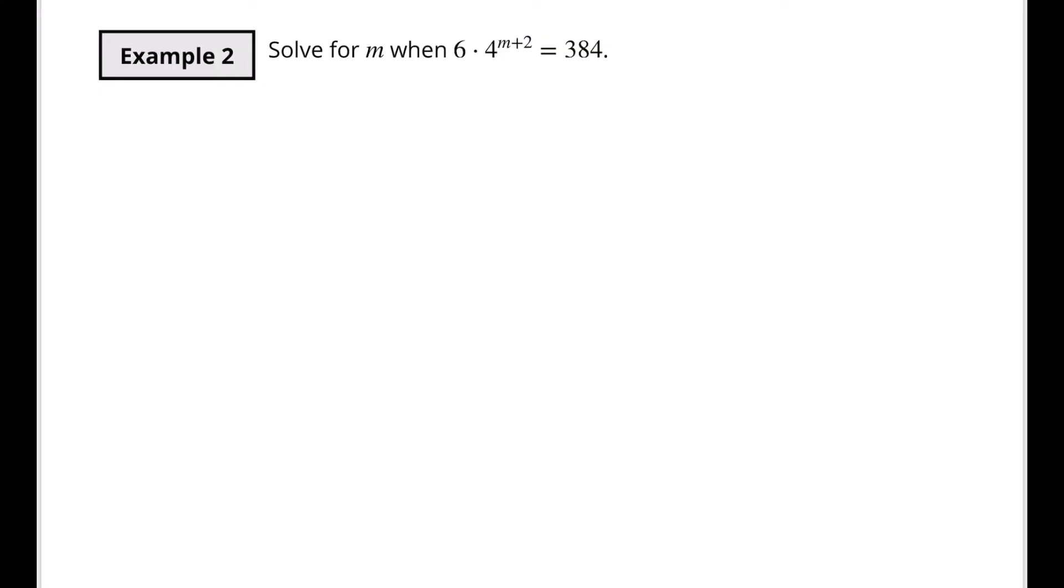So that takes us to our next example where we're finding m when 6 times 4 to the n plus 2 is equal to 384. Okay, so now this is a little bit different than the one above because now I've got 6 and 4 to the n plus 2 power. This is where we're going to be focusing because here's our base of 4. And 6 is not the same base. I cannot combine these two things because they don't have the same bases and they don't have the same exponents. So my rules of exponents say that nothing can be combined here. So what I want to do is I want to try and isolate this. So I'm going to take both sides and I'm going to divide that by 6.